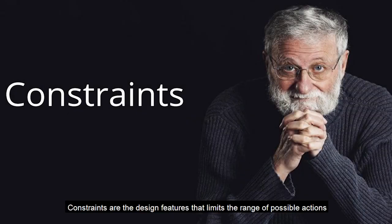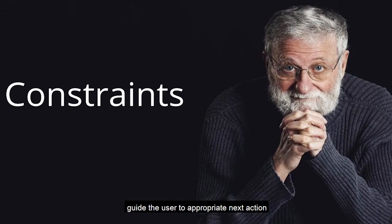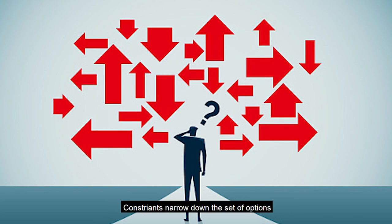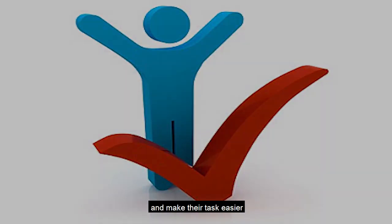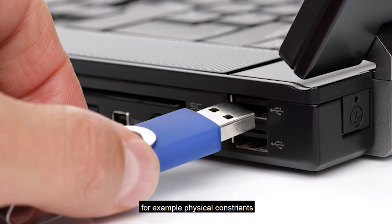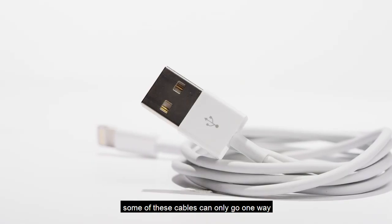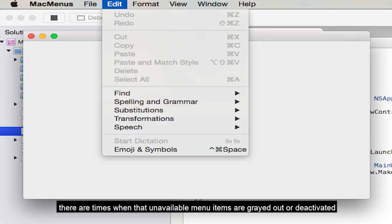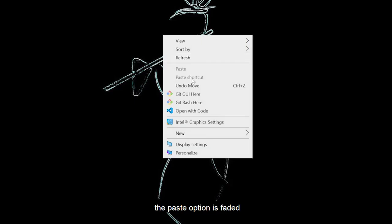Constraints are design features that limit the range of possible actions or interactions a user can take, in order to simplify the interface and guide the user to the appropriate next action. Limitless possibilities often leave the user confused. Constraints narrow down the set of options users have to consider, reduce the chances of error, and make tasks easier. There are different types of constraints. For example, physical constraints: USB cables can only go in one way, not the other. For logical constraints, unavailable menu items are greyed out or deactivated — for example, in Windows Explorer, the paste option is faded as it is unavailable.